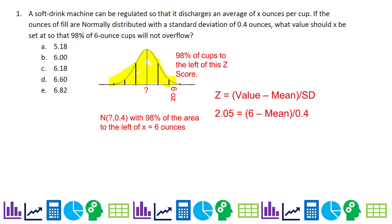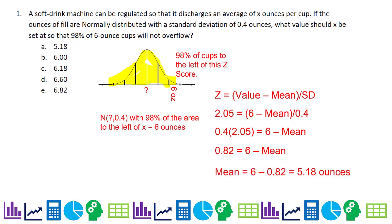We substitute 2.05 for Z in the formula: Z = (value − mean) / standard deviation. So 2.05 = (6 − mean) / 0.4. Multiply both sides by 0.4, then solve for the mean, and we get 5.18 ounces. The trick was to use Z-scores. There's a reason to use the standardized model — it won't always work if you don't know the mean, but with the standardized model we always know Z-scores for any given percentage.